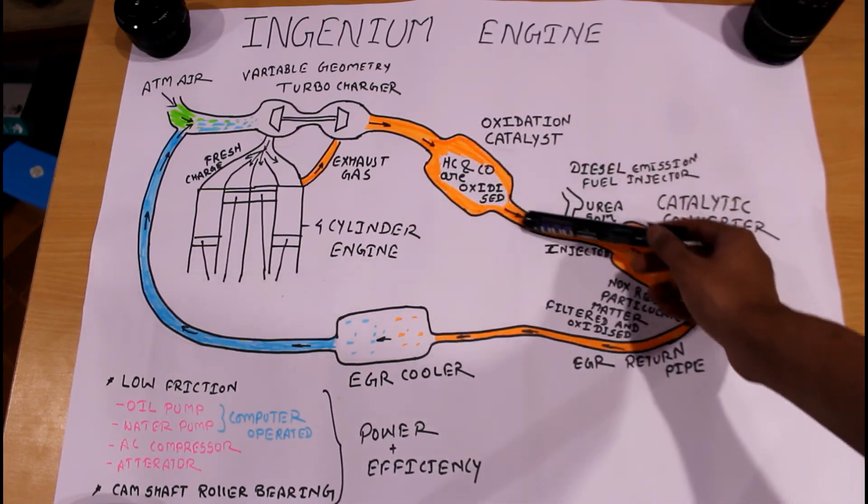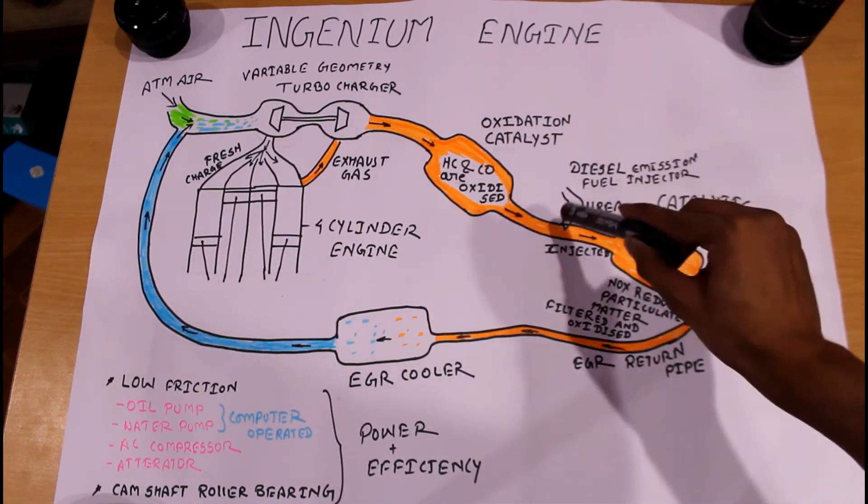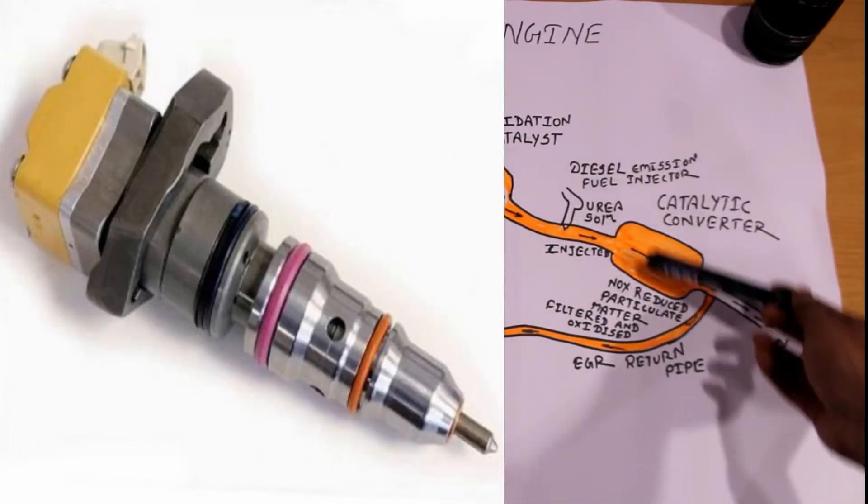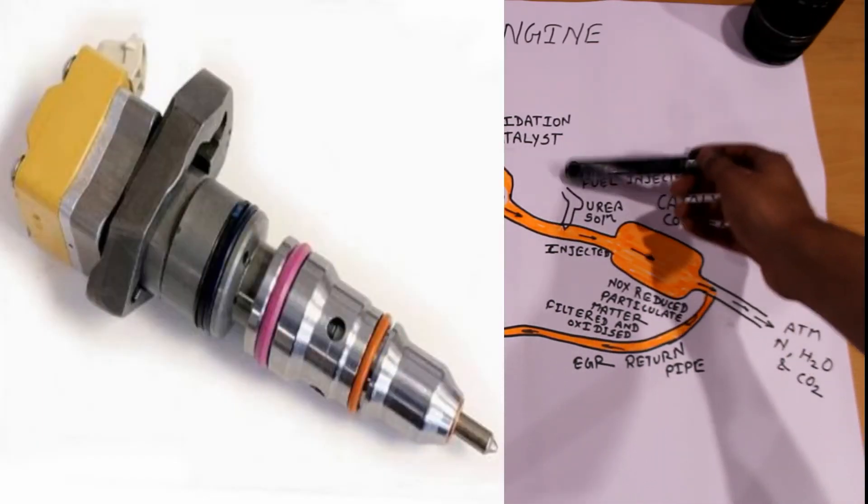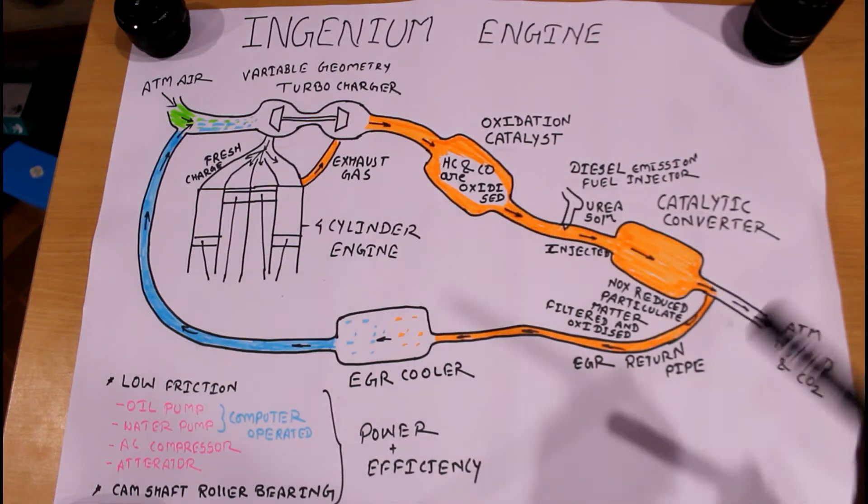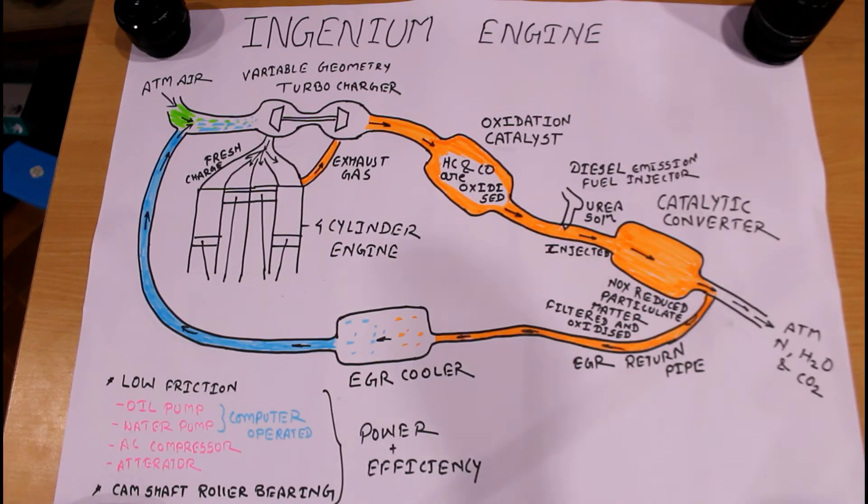After that, the exhaust gases go through a pipe where a diesel emission fuel injector is present. Through this injector, urea solution is injected into the pipeline. With the reaction of urea solution and exhaust gases, very hazardous exhaust gases are converted into less hazardous gases.